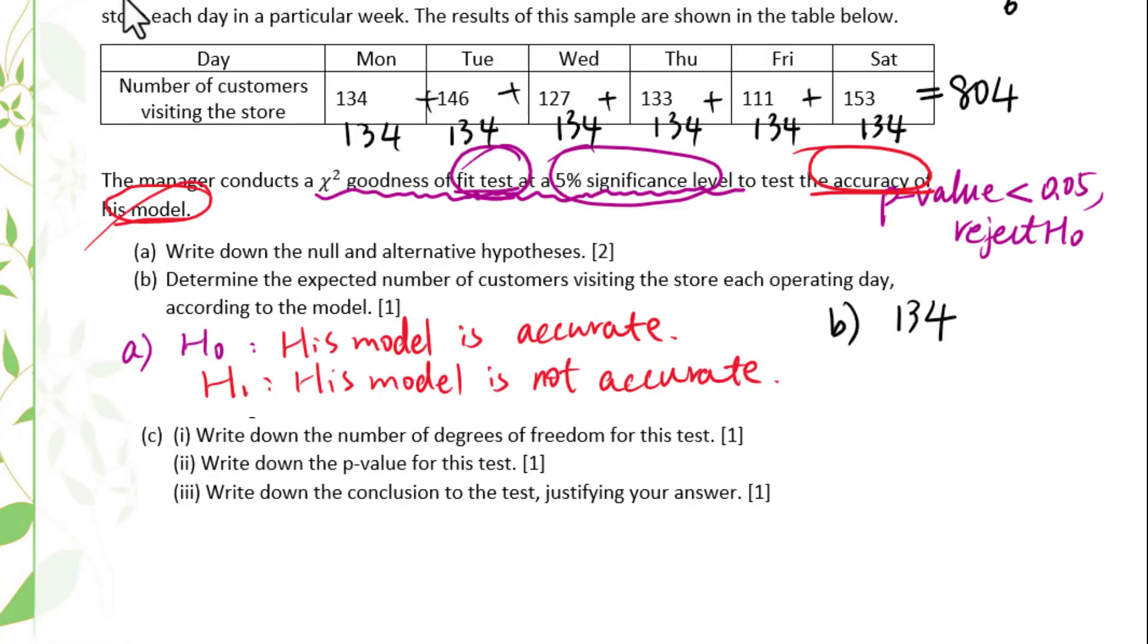Let's go to part c. Write down the number of degrees of freedom for this test. n minus 1 is the degree of freedom. n is the number of data. Altogether, we have 6 data. 6 minus 1 is 5.